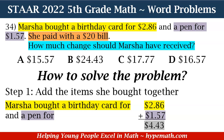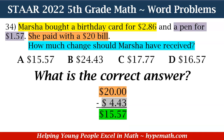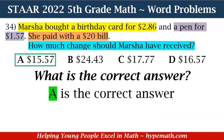That's the value for step one. For step two, we need to subtract the amount from step one — which is $4.43 — from $20, because that is how much money Marsha paid with. Subtracting $20 minus $4.43, our answer is $15.57. Looking at our answer choices to see which one has $15.57 as the answer — yes, the correct answer is A.